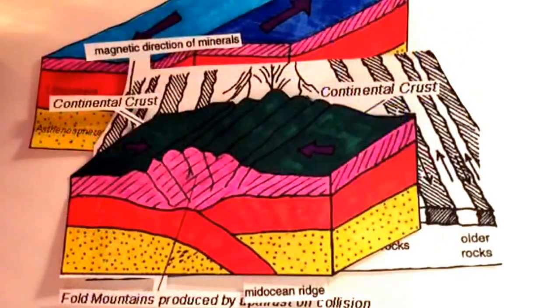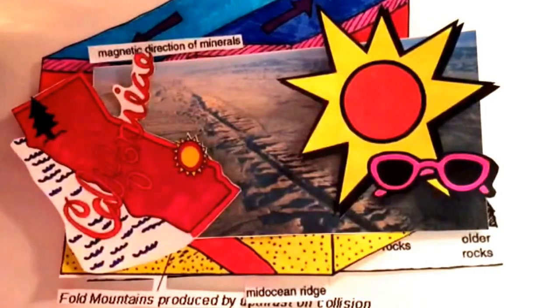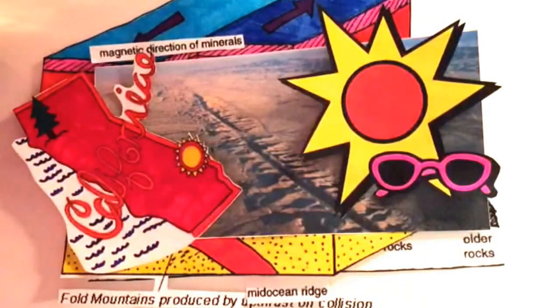Overall, we learned about the three types of plate boundaries and how they are moved by convection currents. These plates are constantly moving and are part of the reason why some features are formed on Earth.